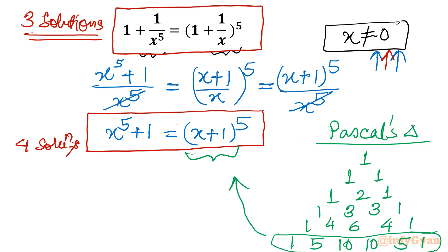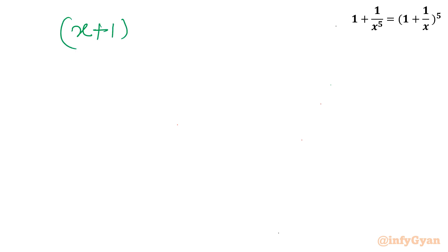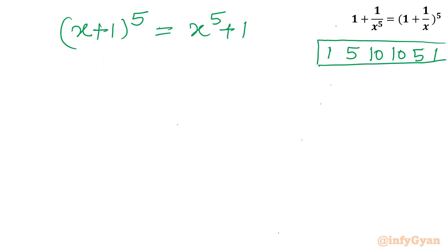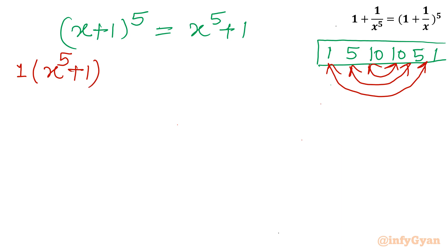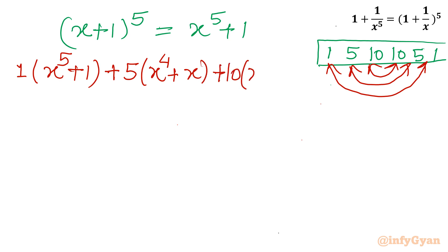These coefficients — 1, 5, 10, 10, 5, 1 — will be used to expand x plus 1 whole power 5. I will club corresponding terms using the concept of symmetry: the highest and lowest powers share coefficient 1, the second terms share coefficient 5 giving 5x times x power 4 and 1, and the middle terms share coefficient 10 giving 10x square times x cube and x square. This expansion is set equal to x power 5 plus 1.